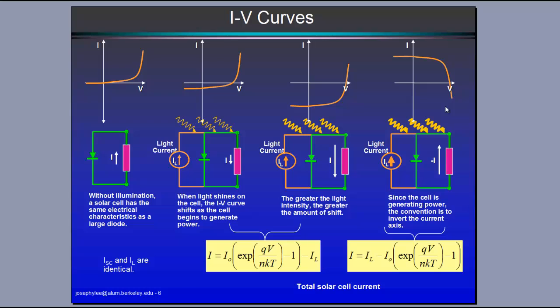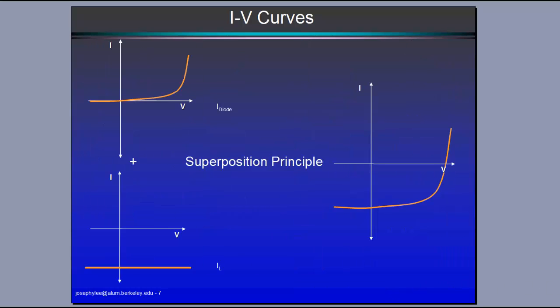If you don't understand the physics, we can think of this diode current as the dark current, and the illumination current as due to the recombination and generation of holes and electrons from light. You add the dark current with the illumination current using the superposition principle, and we get this curve on the right.